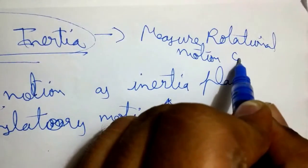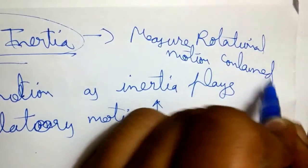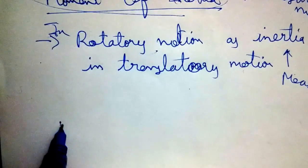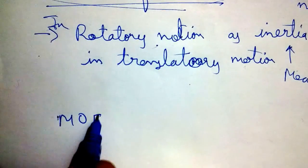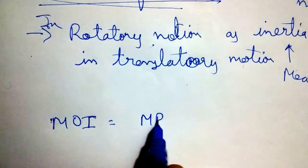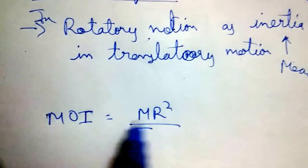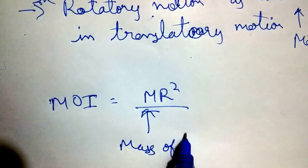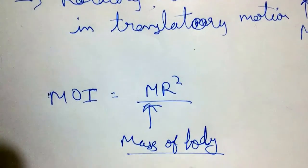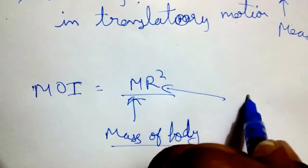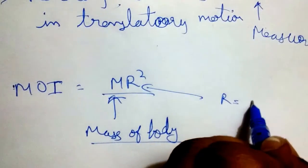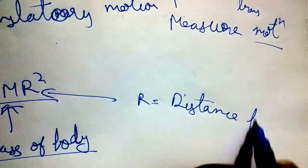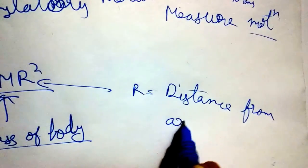The basic mathematical equation of moment of inertia is I = mr², where m is the mass of the body — or the total equivalent mass of the body — and r is the perpendicular distance from the axis of rotation.